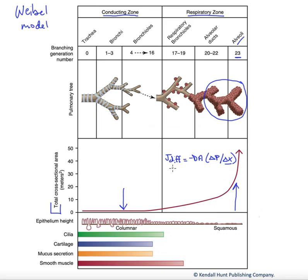And if we look at our Fick's law of diffusion, J diff, or diffusive flux, equals the diffusion coefficient times the surface area available for that diffusion, which we start to see becomes enormous. And so that's very adaptive for maximizing gas transport.